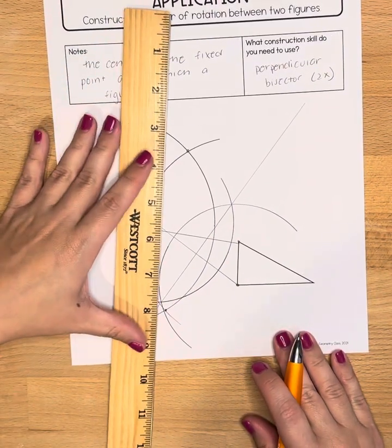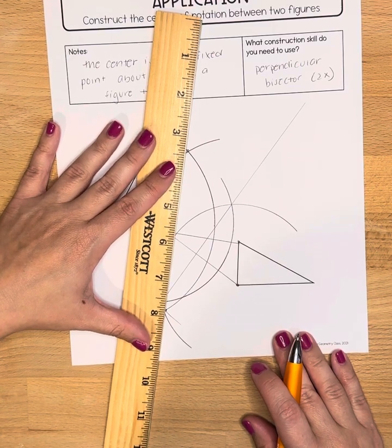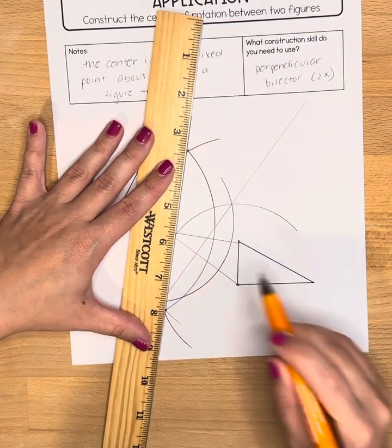So don't rush that process. Now I'm going to use the straight edge or ruler to connect those points. And again, make a nice big line.